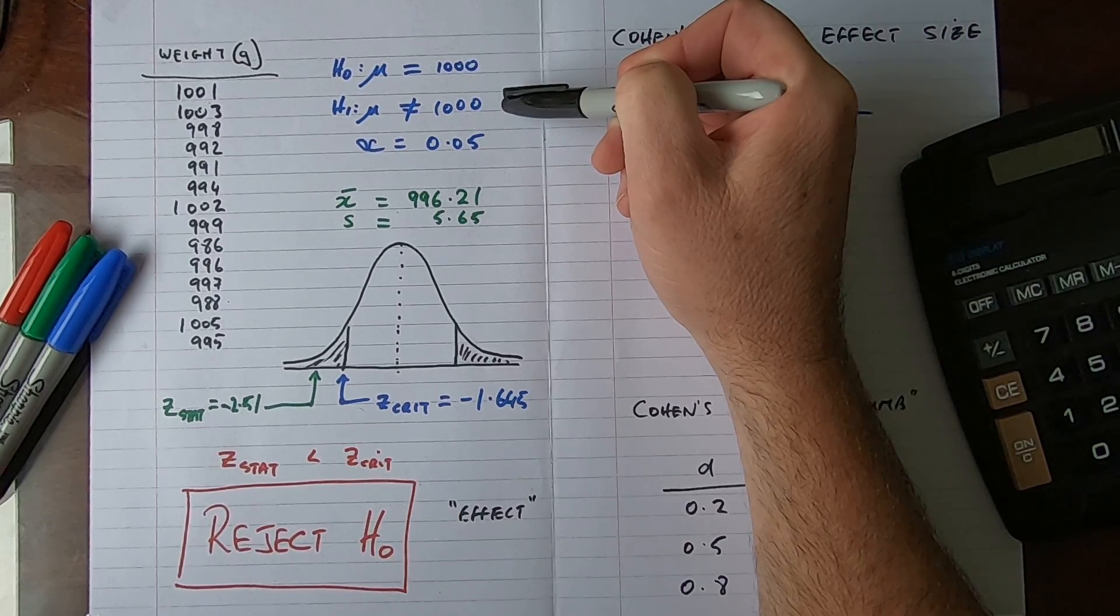And the video for showing you how to calculate the z statistic should be showing up now on your screen as a suggested video. So a z stat of minus 2.51 falls into the reject region. It's less than our z critical value of minus 1.645. We get that value from our alpha value. So our z stat is less than our z crit, therefore we reject the null hypothesis. So we're rejecting the statement up here that the population mean is equal to a thousand and in favor of the alternative hypothesis that the population mean is not equal to a thousand. So it would appear here that the manufacturing process is having an effect on the weight of the bags of food.